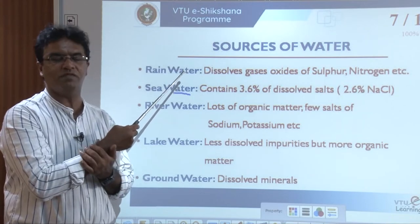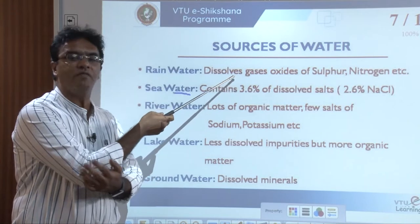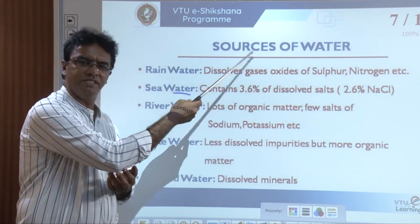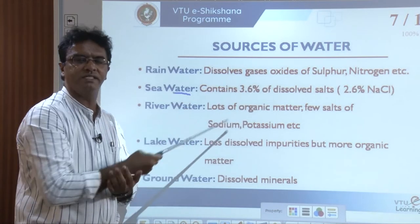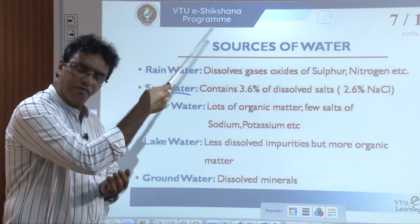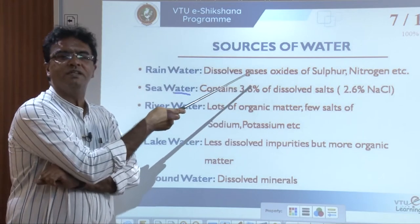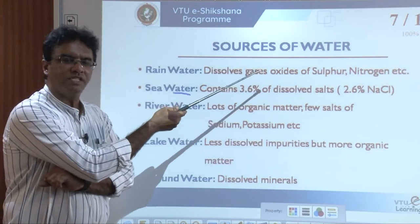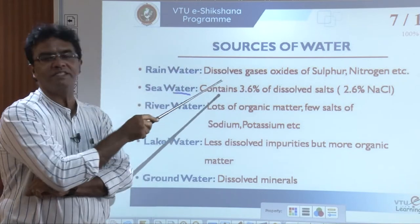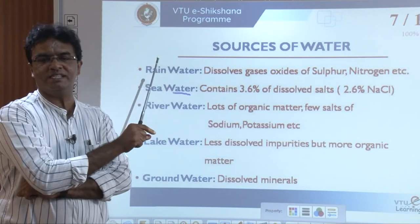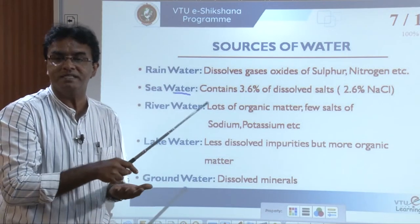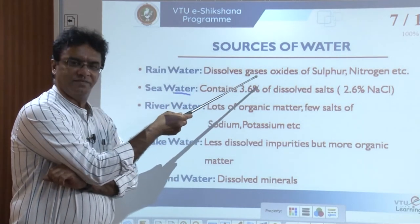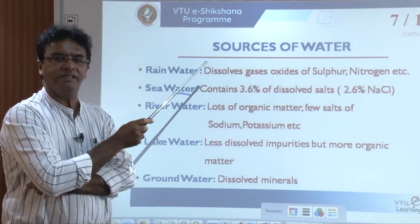Rain water is believed to be the purest form of water, but when it enters the earth's atmosphere, it dissolves gases like oxides of sulphur, sulphur dioxide, nitrogen dioxide, carbon dioxide, and small amounts of oxygen. It also dissolves very small solid particles present in the atmosphere. By the time it reaches the surface, rain water becomes impure to a certain extent, depending on the extent of impure and dangerous gases present in the atmosphere.